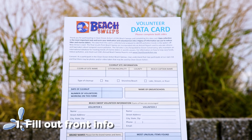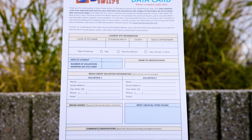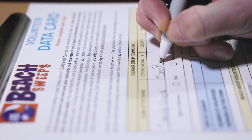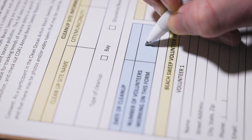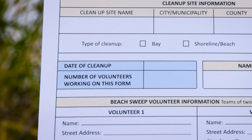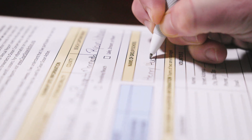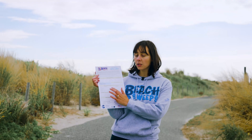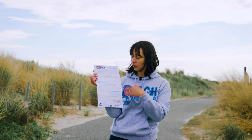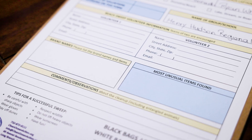To fill out your Clean Ocean Action data card at the beach sweeps, the first thing you want to do is fill out all the information on the front of the data card. That includes your cleanup site — the town, the county, the beach captain name — the number of volunteers working with you to tally and collect debris, the date of the cleanup, and the name of your group, school, or organization.